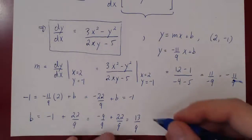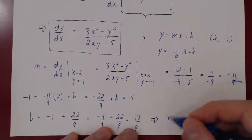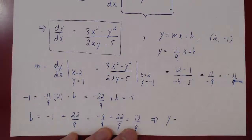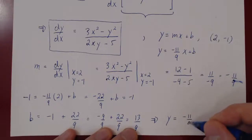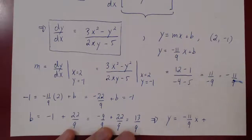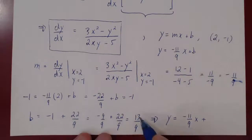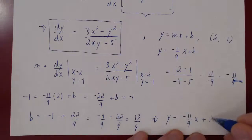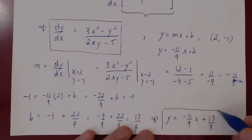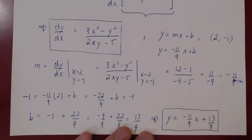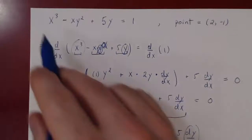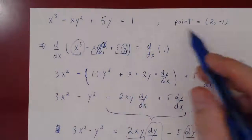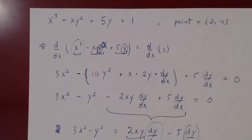Now we have the equation of our tangent line: y equals negative 11 over 9 times x plus 13 over 9. This is the equation of the tangent line to the curve x cubed minus xy squared plus 5y equals 1, specifically at the point x equals 2, y equals negative 1.